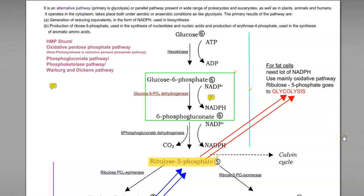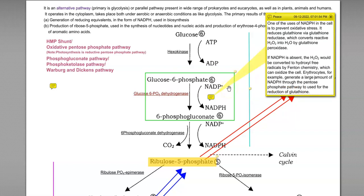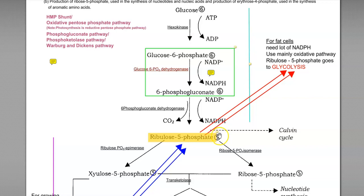The next step is conversion of 6-phosphogluconate to ribulose 5-phosphate, accomplished by the enzyme 6-phosphogluconate dehydrogenase. Both steps result in production of large amounts of NADPH as reducing equivalents. These reducing equivalents are commonly channeled into fat cells, where NADPH is used to prevent oxidative stress by reducing glutathione via glutathione reductase. The glutathione reductase enzyme converts reactive hydrogen peroxide into water with the help of glutathione peroxidase. Additionally, NADPH is used in autotrophic organisms to fix carbon dioxide into cell carbon via the Calvin cycle.